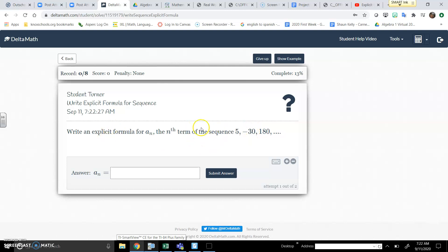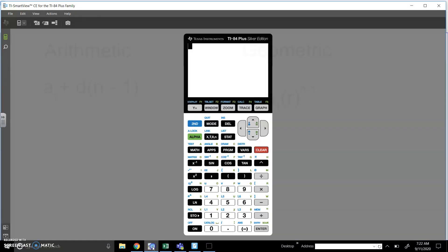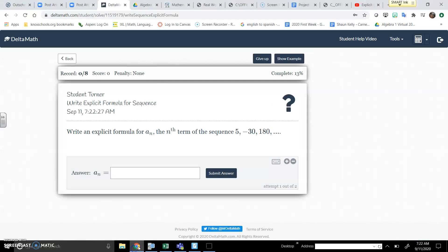The first one says write a sequence explicit formula for the nth term of 5, negative 30, and 180. So the first thing we have to do is think about where these numbers fall in terms of arithmetic or geometric. Is the pattern more based on multiplication and division, or is it more adding and subtracting? If you divide negative 30 by 5, you're going to get negative 6. And then if you multiply negative 30 by negative 6, you get 180.